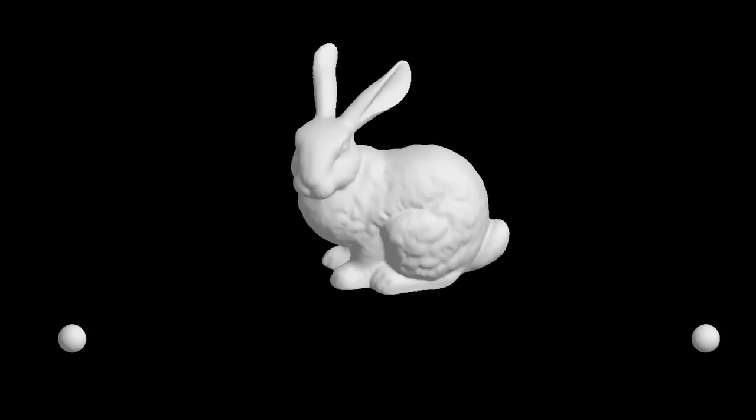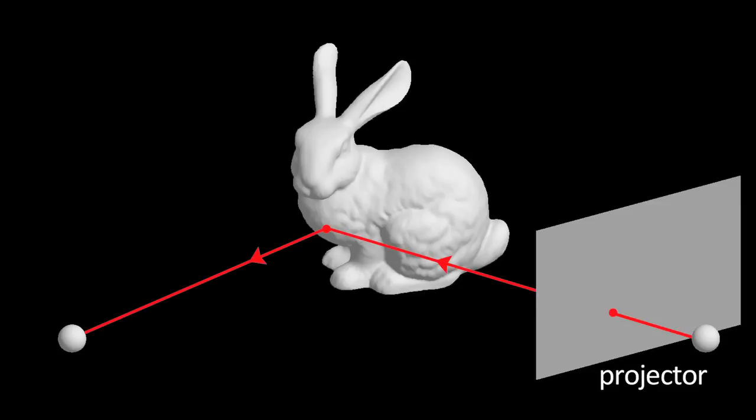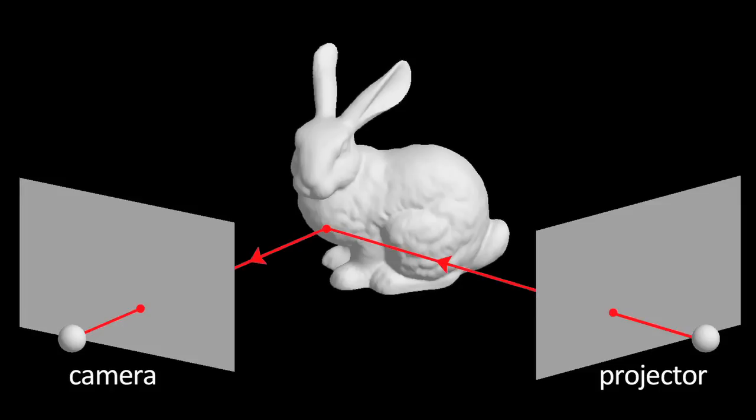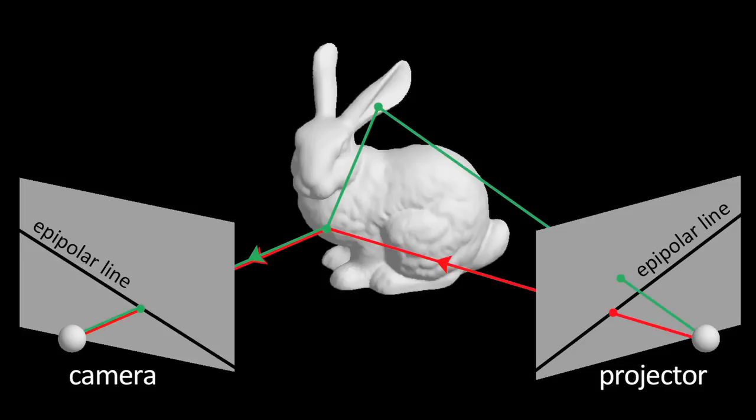The key observation is that the direct light paths of a projector camera system travel between corresponding epipolar lines, whereas indirect light paths generally do not.